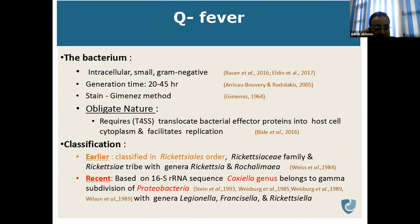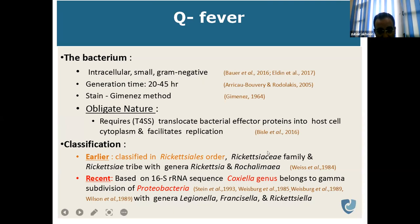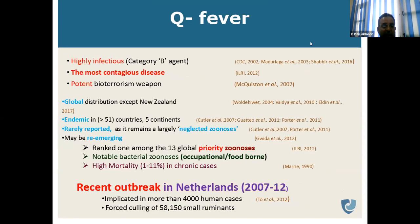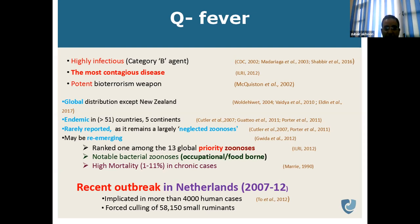Q fever is another zoonotic disease of dangerous nature. The bacterium is intracellular, small, gram-negative, with a generation time of 20 to 45 hours. It requires translocated bacterial effector proteins into host cells. Classified in the rickettsial order, it belongs to the gamma subdivision of Proteobacteria. It is a highly infectious category B agent, the most contagious disease, and also used as a potent bioterrorism weapon. It has global distribution except in New Zealand, is endemic in greater than 51 countries across five continents, and is largely a neglected zoonosis. It is ranked number one among the 13 global priority zoonoses, causes high mortality of 1 to 11% in chronic cases.